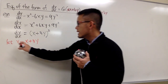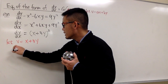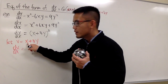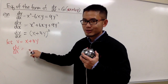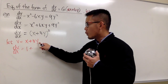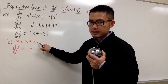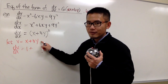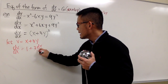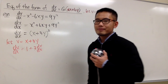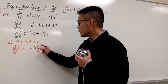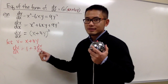We differentiate both sides of v = x + 3y. So dv/dx equals the derivative of x with respect to x, which is 1, plus the derivative of 3y with respect to x. Since y is a function of x, that gives us 3·dy/dx. I want to isolate dy/dx so I can substitute it in.